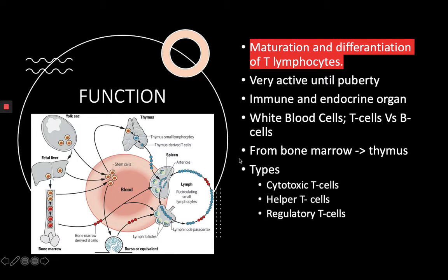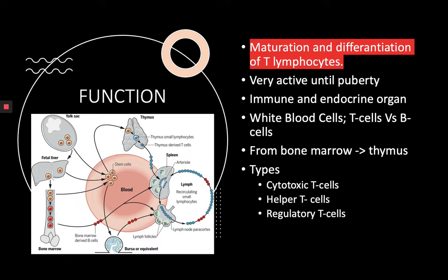We have the cytotoxic T cells, which are responsible for directly killing infected cells. Then there are helper T cells, which are responsible for getting B cells to make antibodies and also priming other T cells to attack foreign invaders. And then you have the regulatory T cells — these are really important. They play the role of police and suppress any B cells or T cells that mistakenly are harming the body.